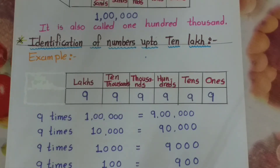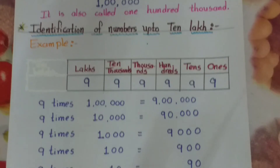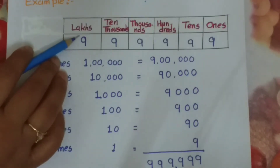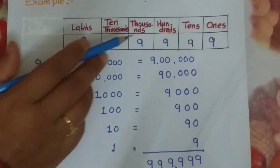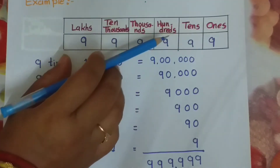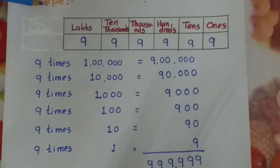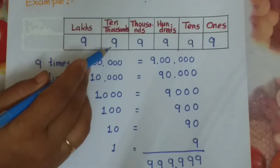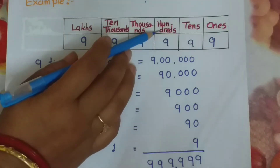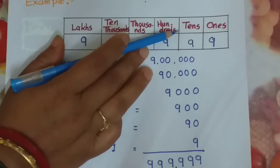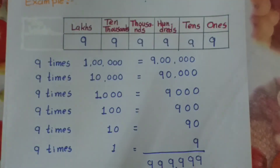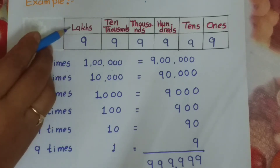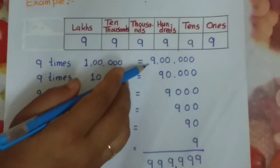See here — on the lakh place, 9 is there. On the 10,000s place, also 9. On the thousands place, 9. On the hundreds place, 9. On the tens place, 9. On the ones place, 9. Now, 9 times 1 lakh gives 9 lakh.